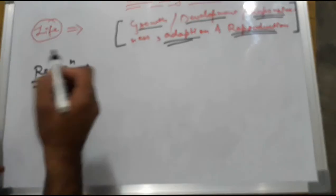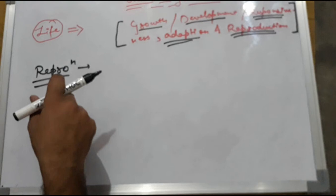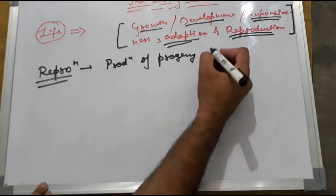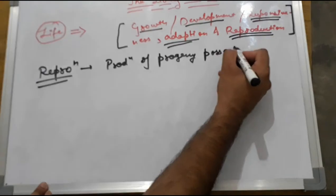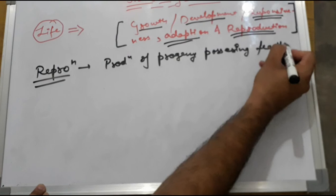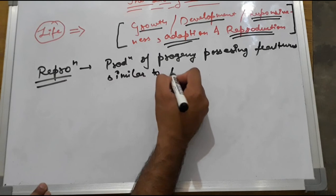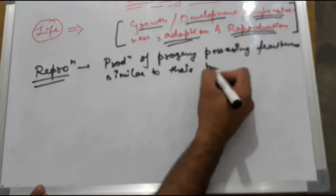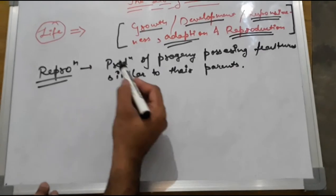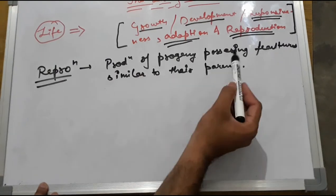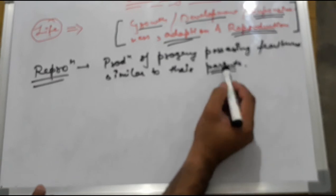Reproduction. I am writing in abbreviated form. Now what is reproduction? It refers to production of progeny possessing features similar to the parents. That is reproduction.